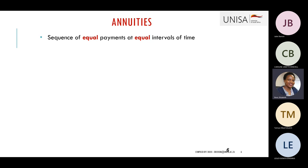Annuities are sequential equal payments at an equal interval of time. For example, if you have a loan at the bank and you sign an agreement to pay 3,500 every month — that will be your equal payment at an equal interval. Your interval will be the monthly payments and your equal payments will be those 3,500 every month. We call them annuities, or we can also refer to them as payments.